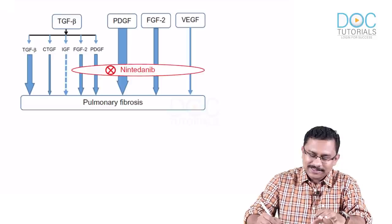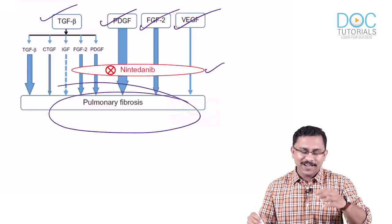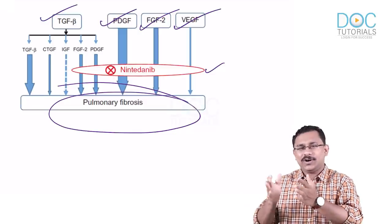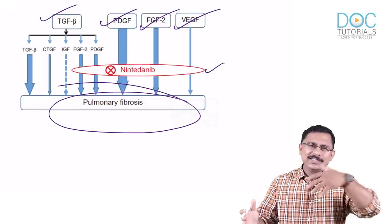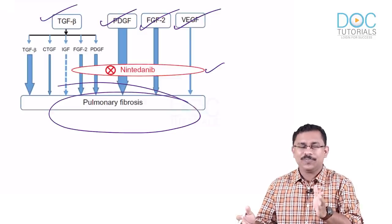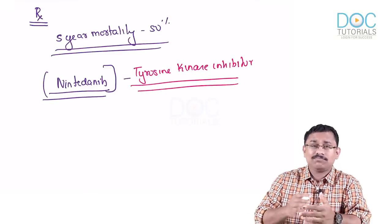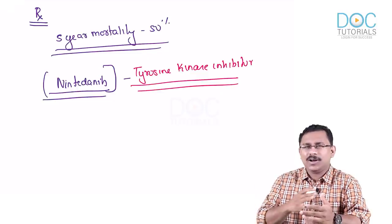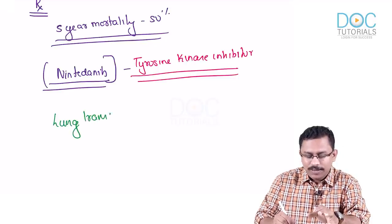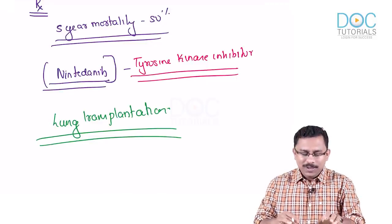Nintedanib acts on fibrosing cytokines TGF-beta, PDGF, FGF, and VEGF — all responsible for pulmonary fibrosis — helping to arrest fibrosis. It does not reverse existing fibrosis but is good at halting disease progression. In late-stage IPF where lung parenchyma is totally destroyed, you may have to go for lung transplantation.